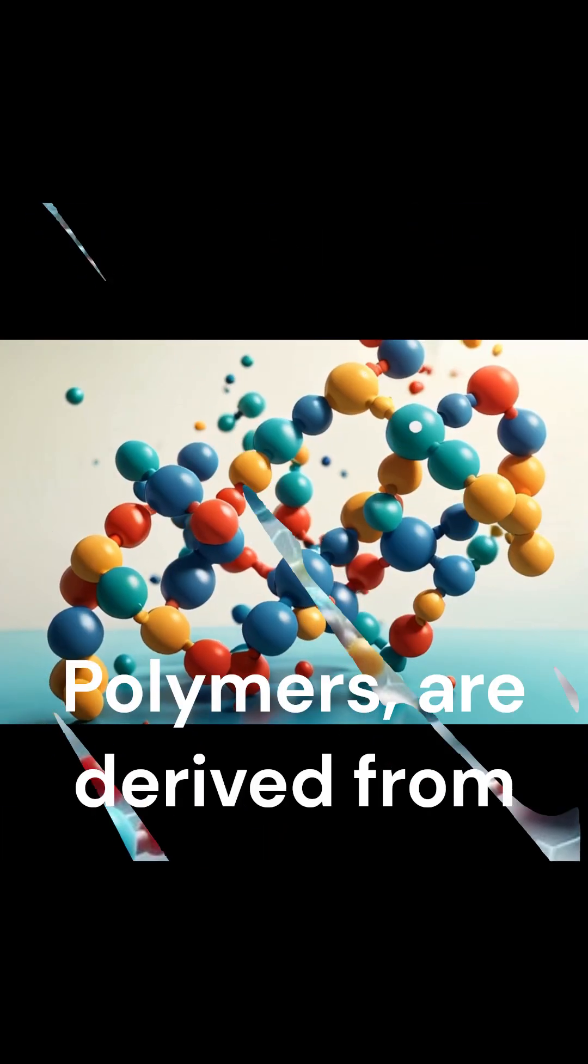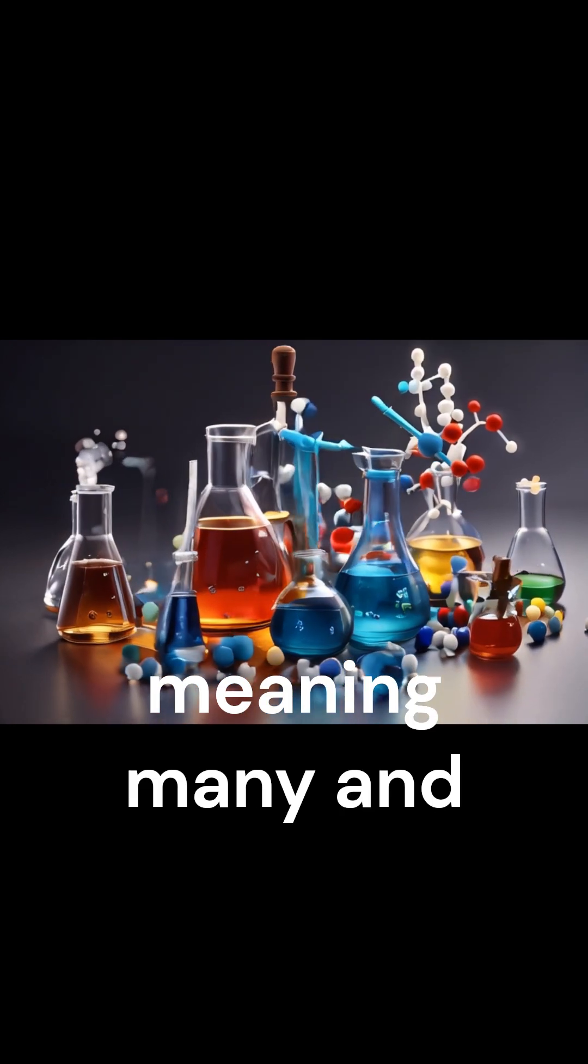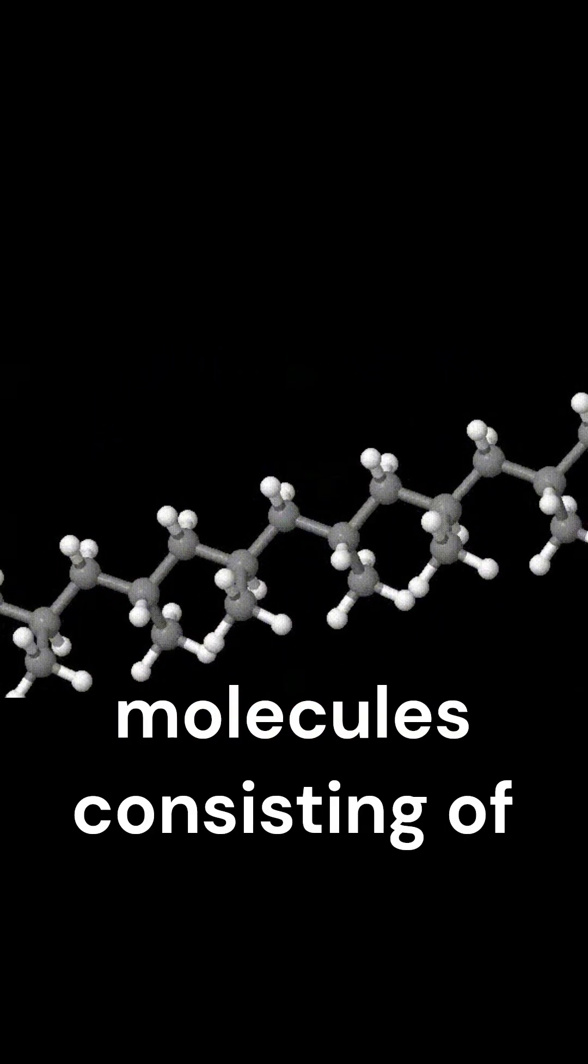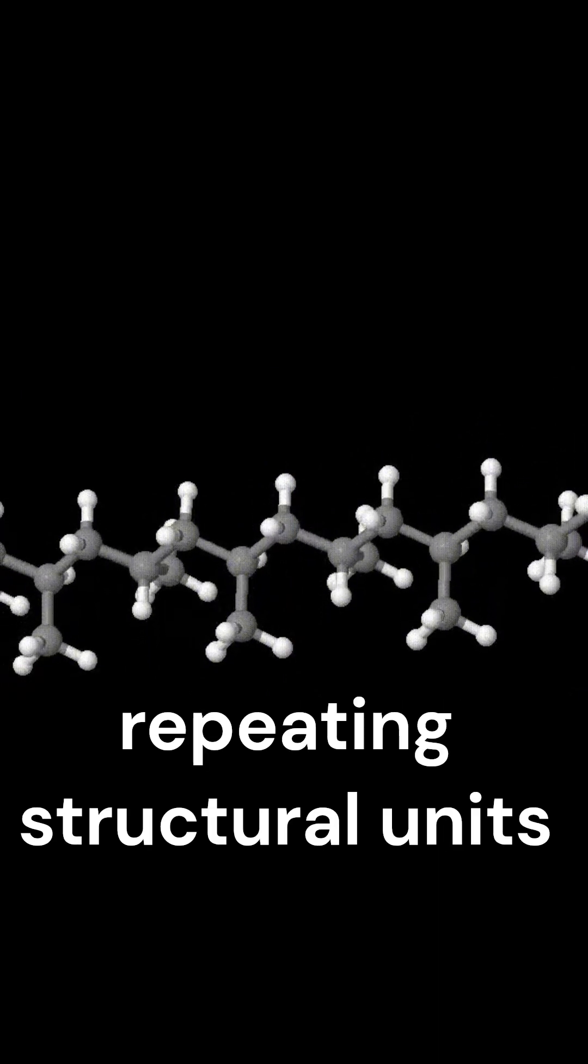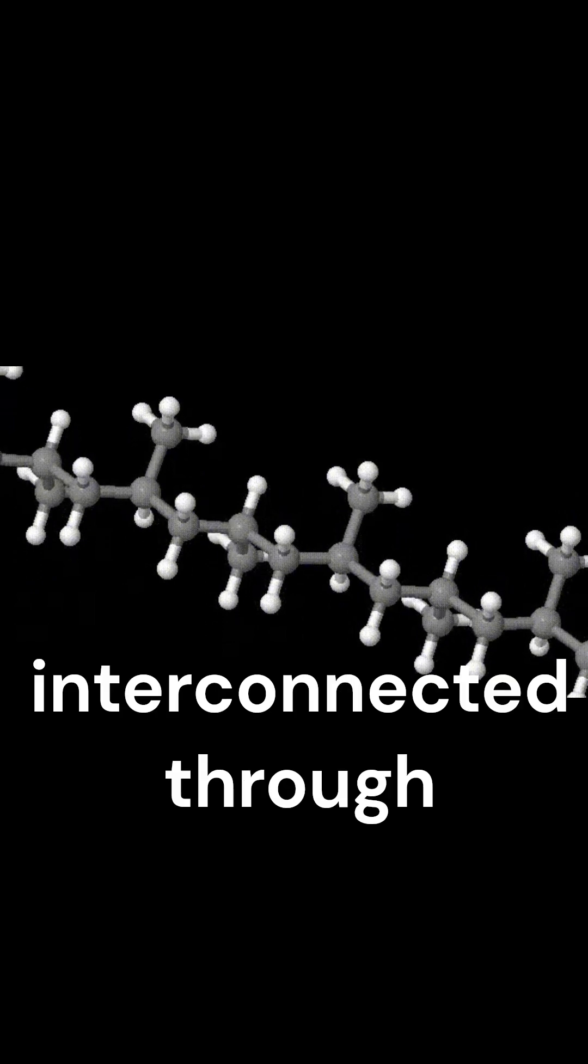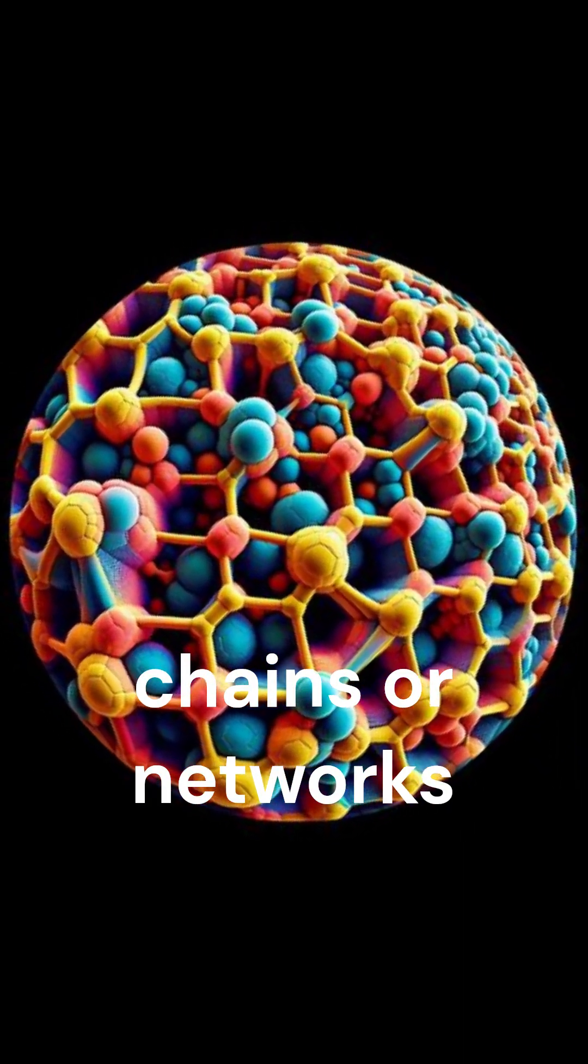What are polymers? Polymers, derived from the Greek roots poly, meaning many, and mer, meaning part or unit, are intricate molecules consisting of repeating structural units termed monomers. These monomers are interconnected through covalent bonds, forming extensive chains or networks.